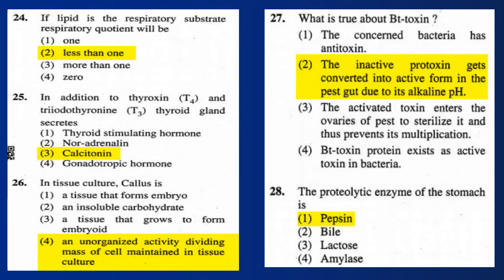Question 24: If lipid is the respiratory substrate, then the respiratory quotient will be less than 1. Question 25: In addition to thyroxine (T4) and triiodothyronine (T3), the thyroid gland also secretes calcitonin.